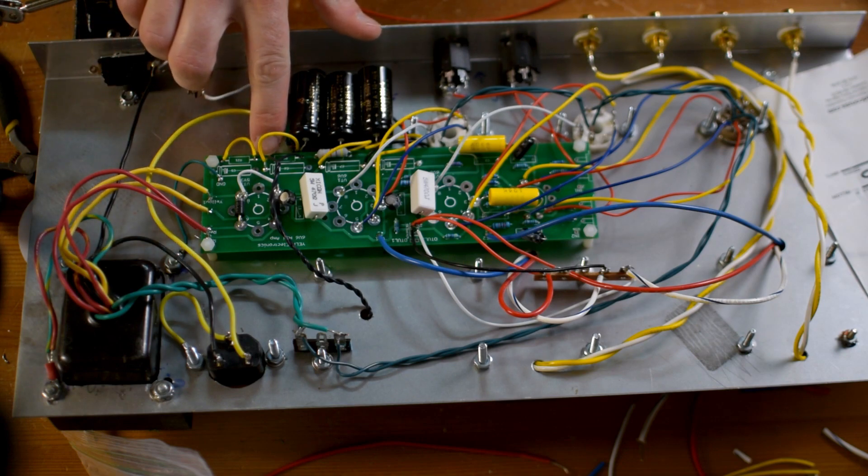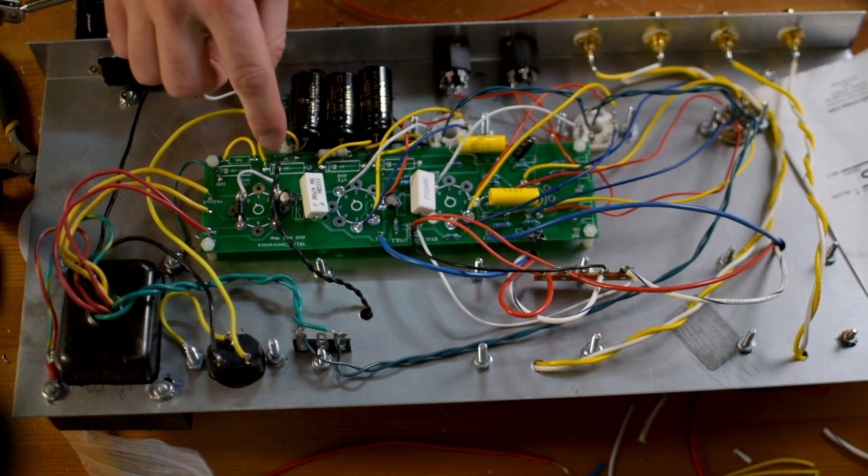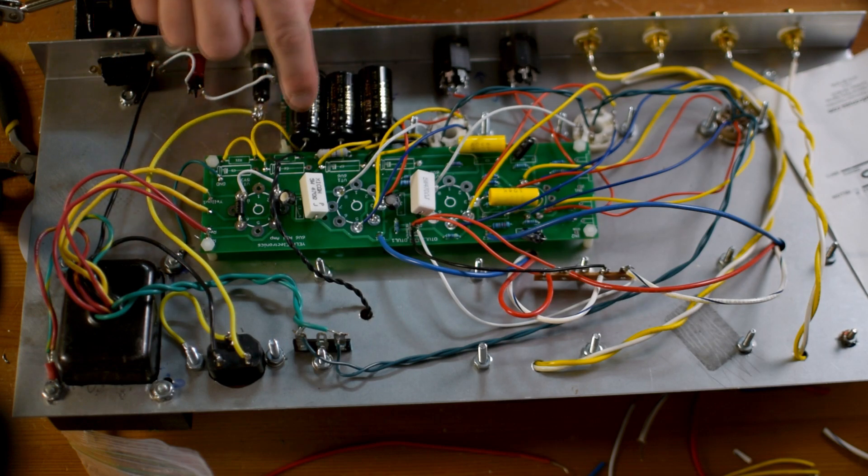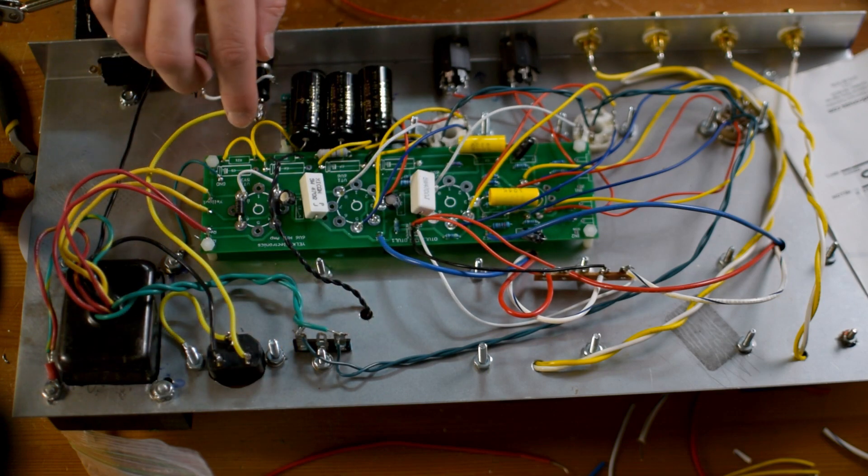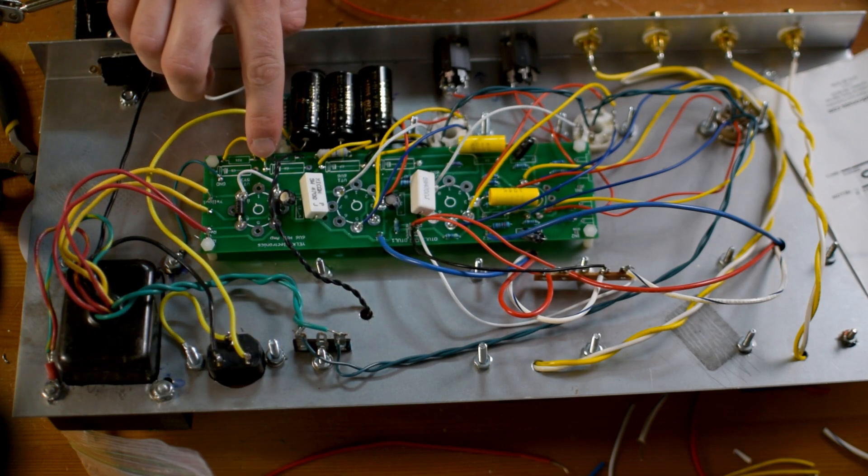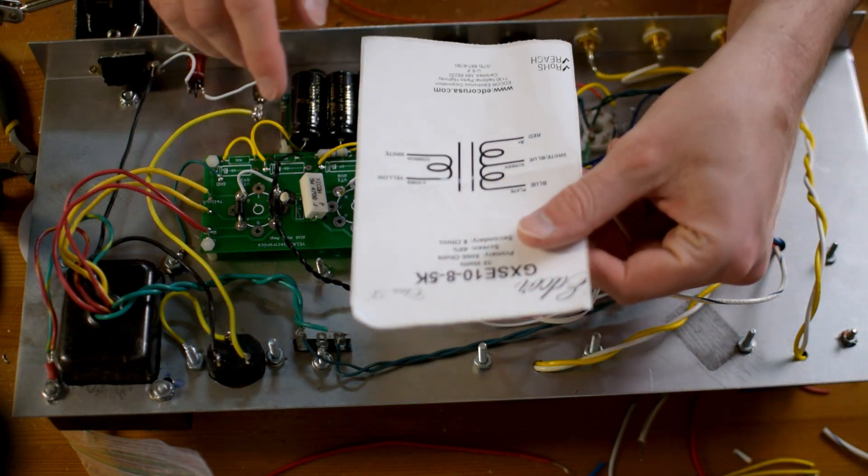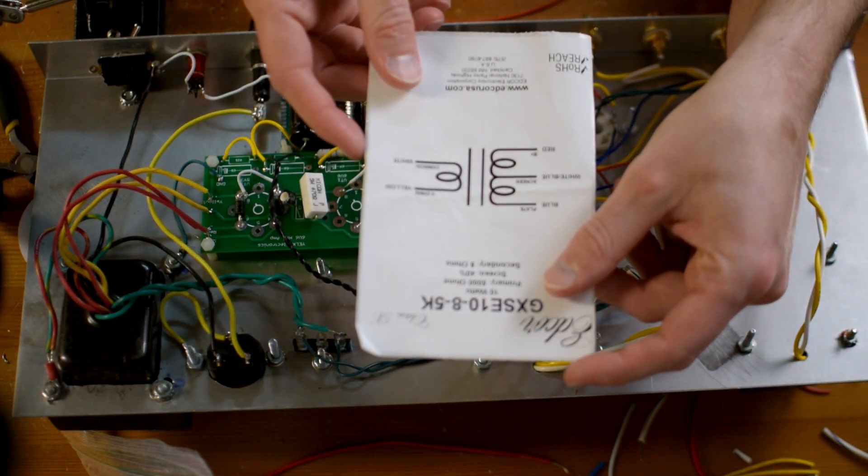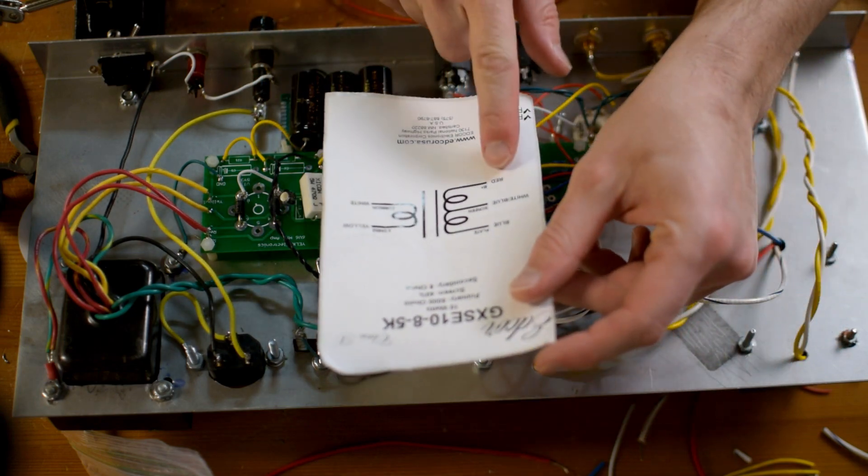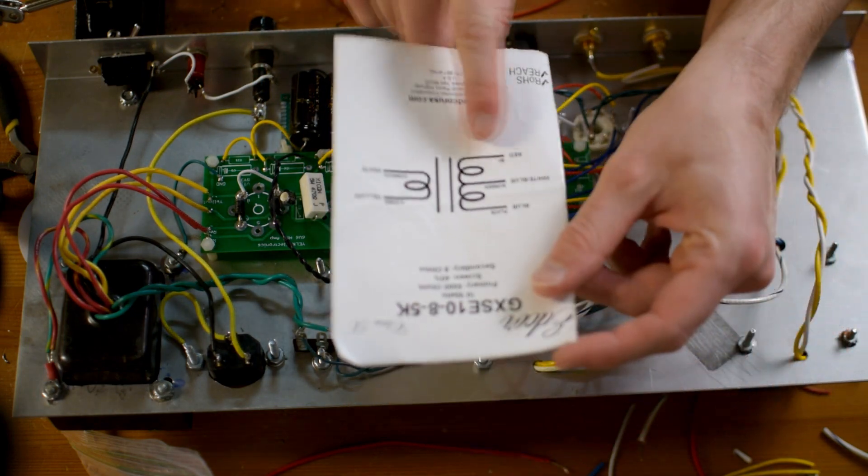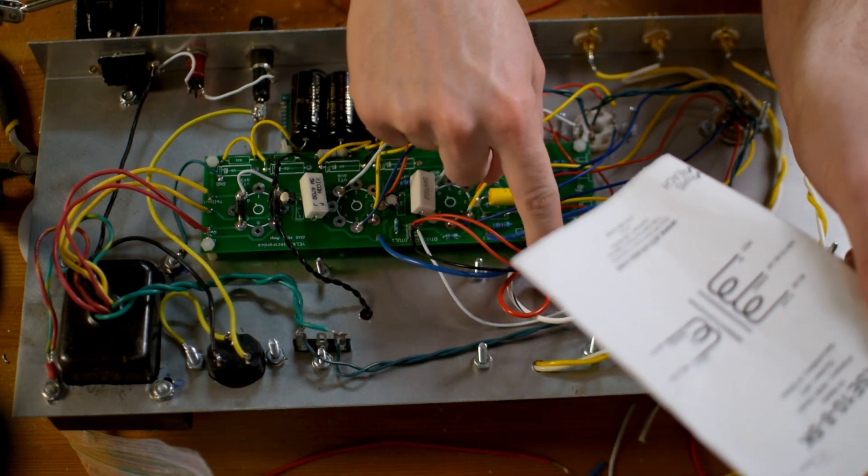So now we get to our first B plus step down. So we've got this yellow wire which is going to this filter cap, and then we've got these black wires which is going out to our choke. Now at this stage, this is where if we look at this diagram, this is the diagram that came with the output transformers. This red B plus node, these red wires are right up here.